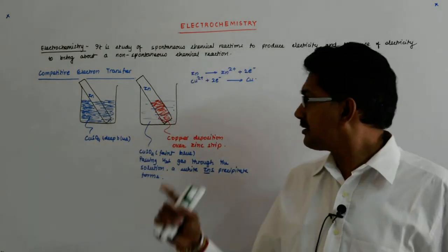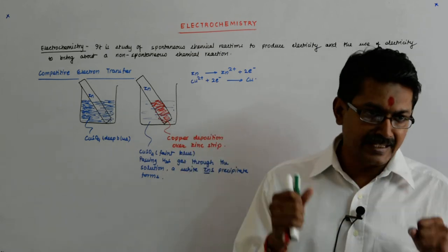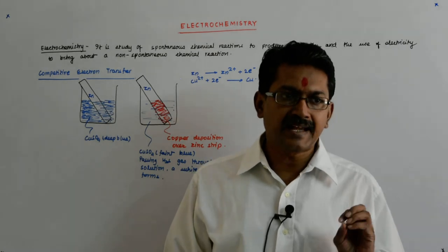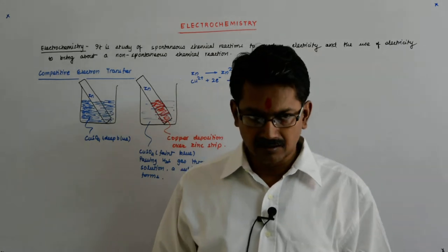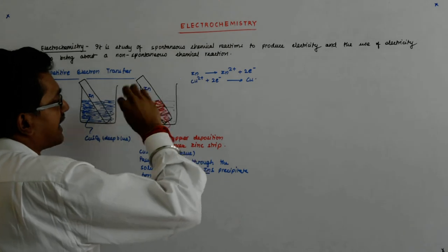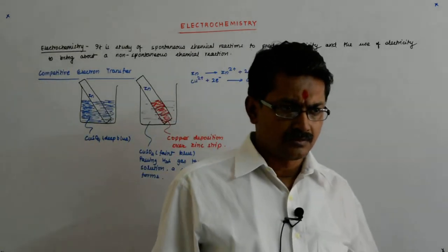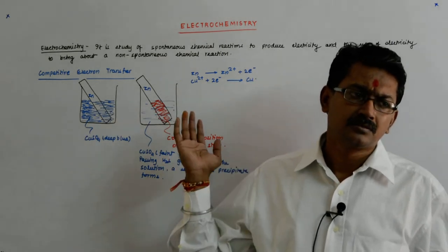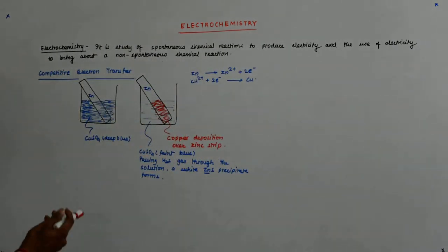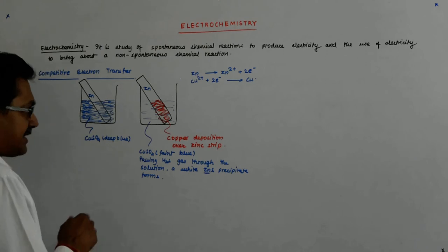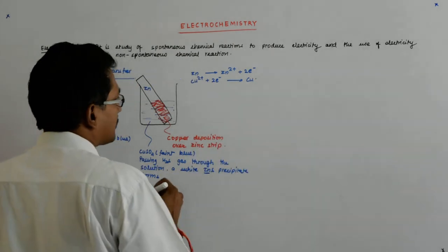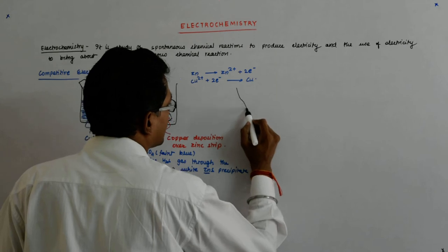What has happened is that Zn forces Cu²⁺ to accept two electrons and become copper metal, which gets deposited on the strip. Also, in the initial phase, the zinc will keep on eroding from the strip. If you take the strip out, the zinc part may have eroded significantly.